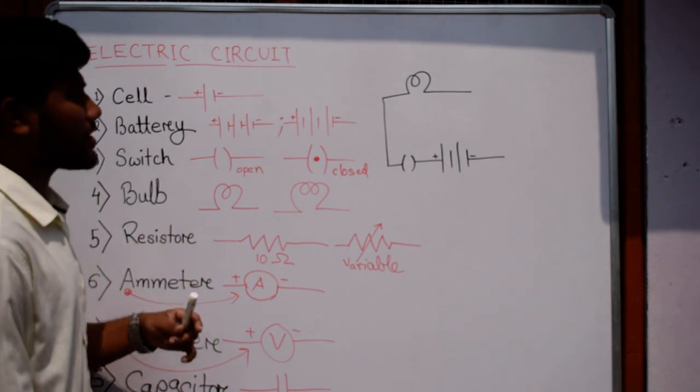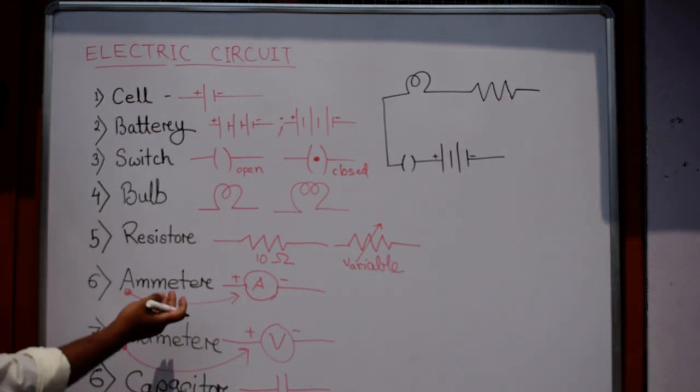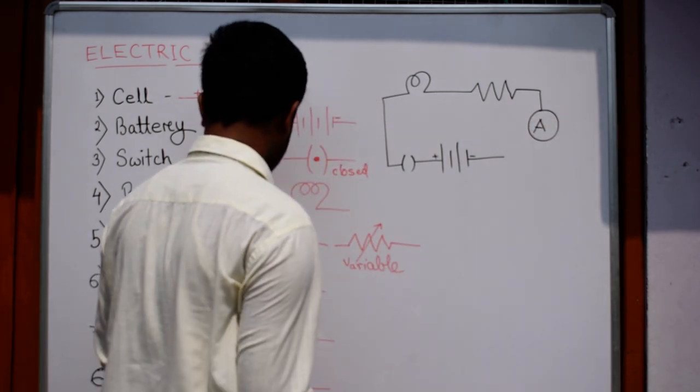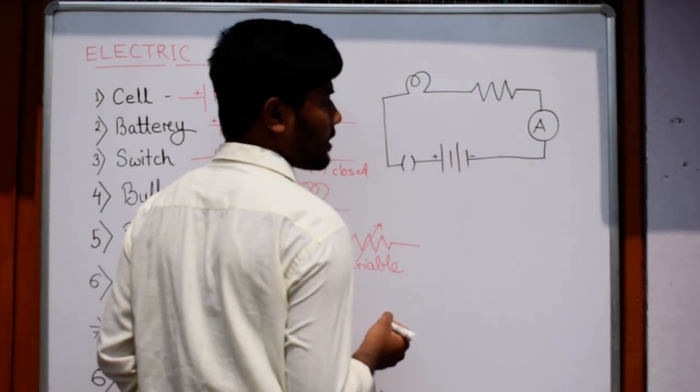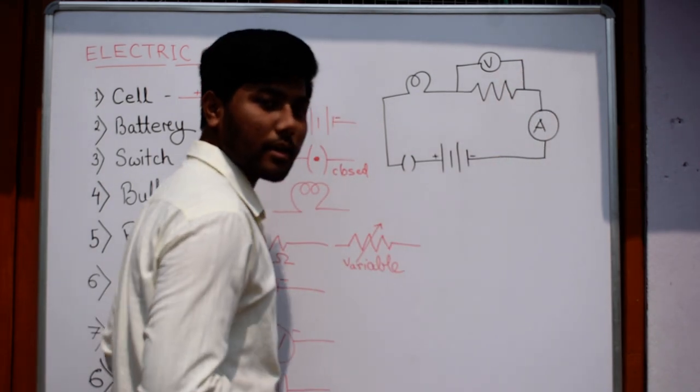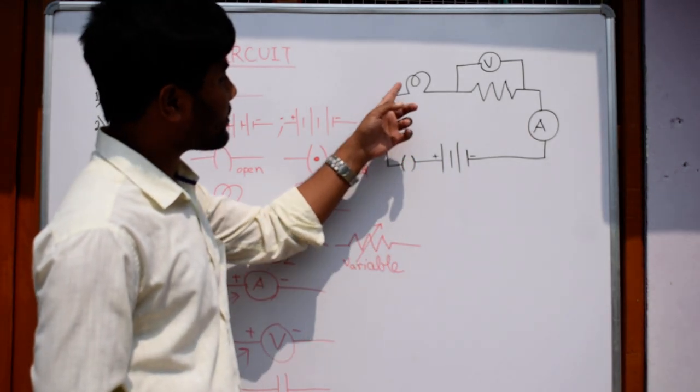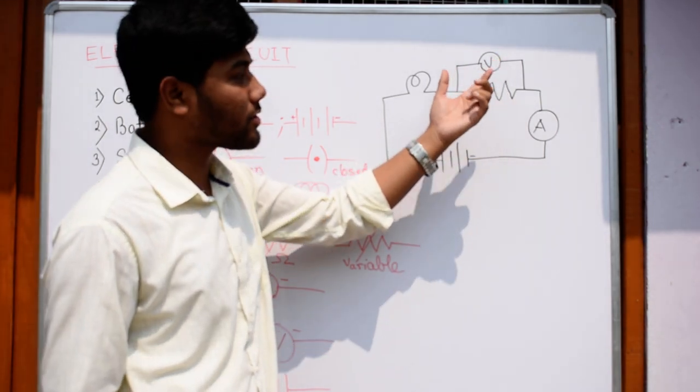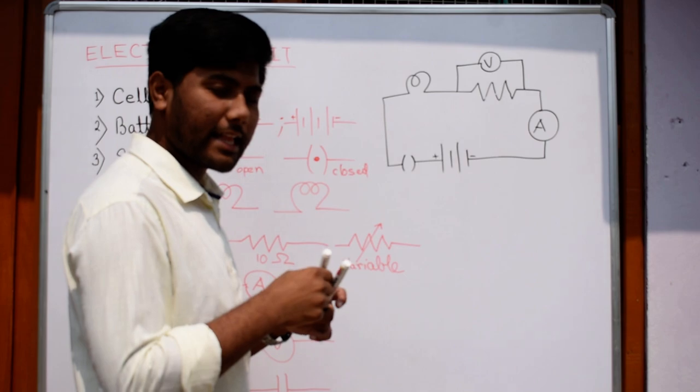After that comes resistor. After that comes ammeter. After that comes voltmeter. Now where we will keep the voltmeter is interesting. We will keep the voltmeter here. The switch is in open circuit. We will keep the voltmeter in parallel connection with the resistor. Voltmeter is always connected in parallel and ammeter is always connected in series.